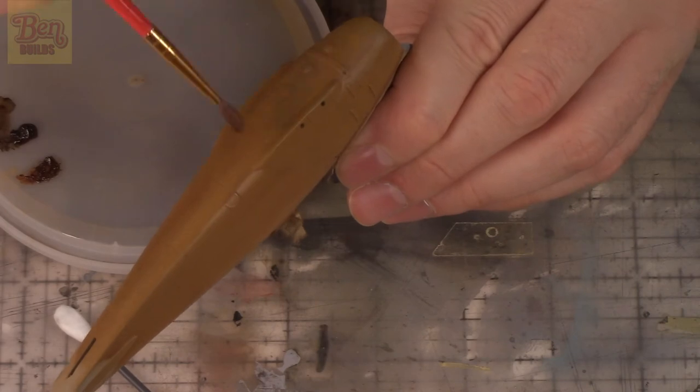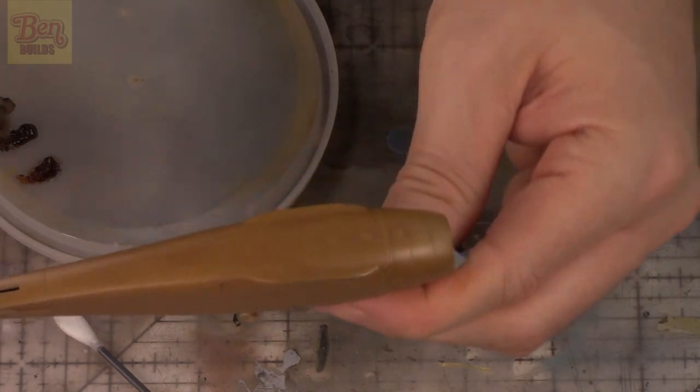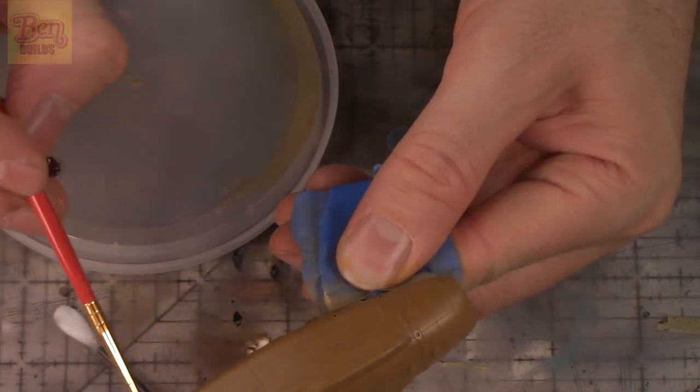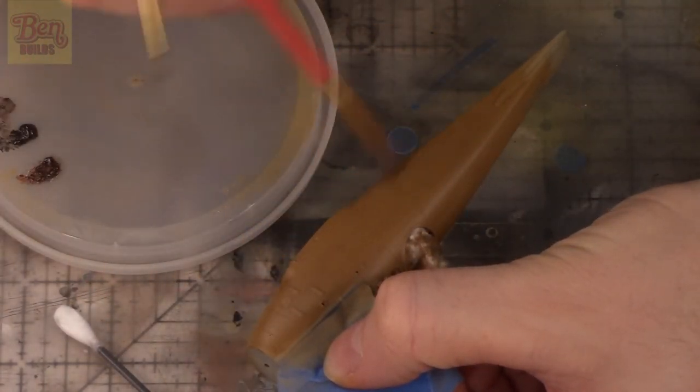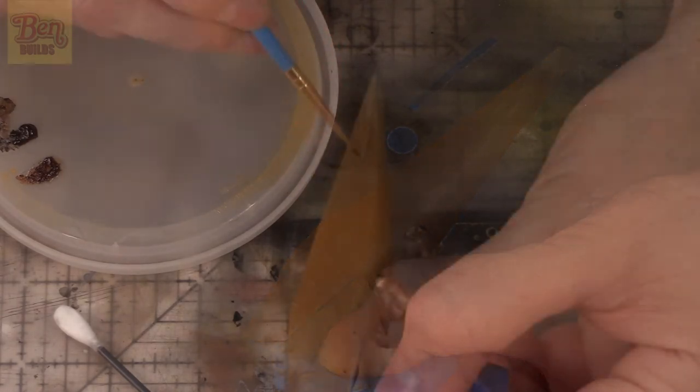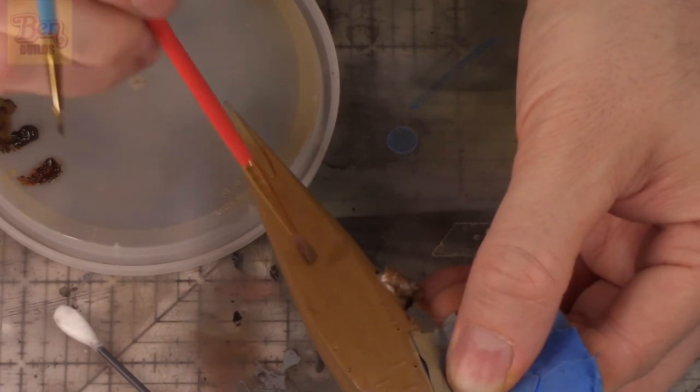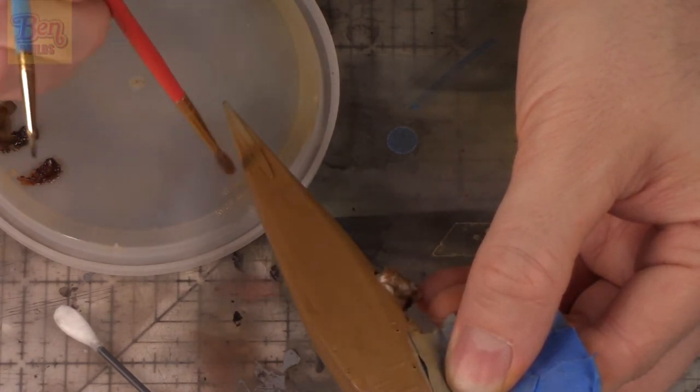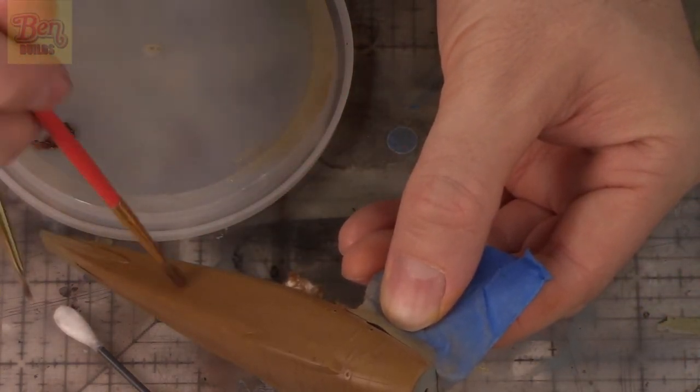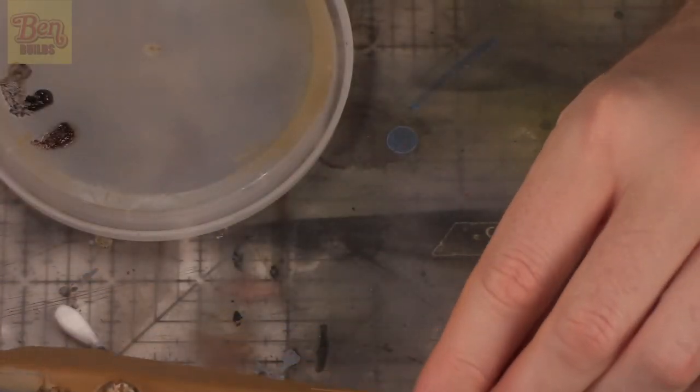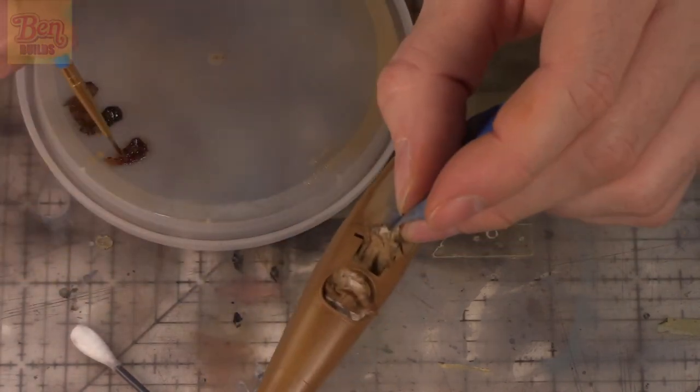So now we're going to add some streaks of burnt sienna. I really like that color. That's going to add another layer of subtle variations and I really, really hope this turns out well. So far I'm loving it. So let's see what we can do with that burnt sienna.